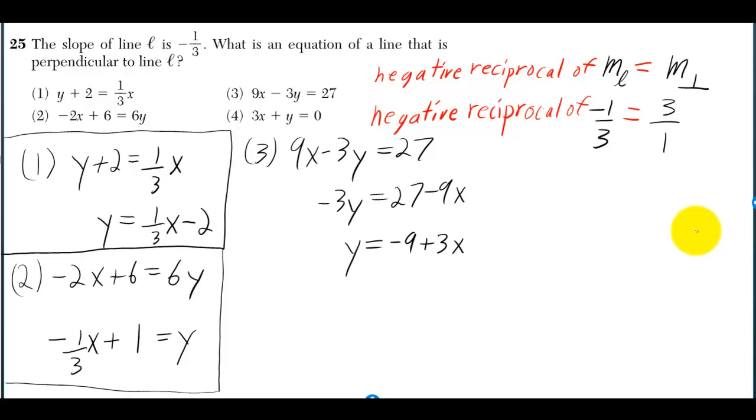The slope of line L is negative 1 over 3. What is an equation of a line that is perpendicular to line L? The slope of the perpendicular line is equal to the negative reciprocal of the slope of L. The slope of L is negative 1 over 3, so the negative reciprocal of negative 1 over 3 is positive 3 over 1.